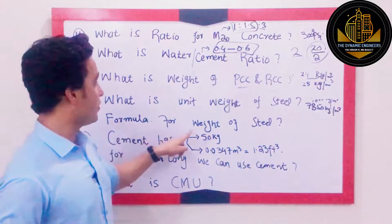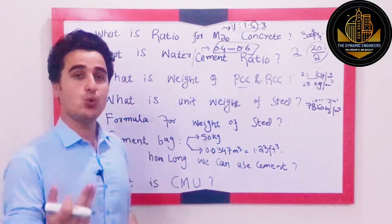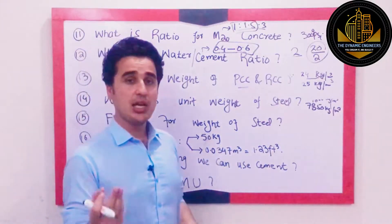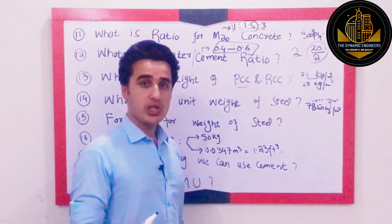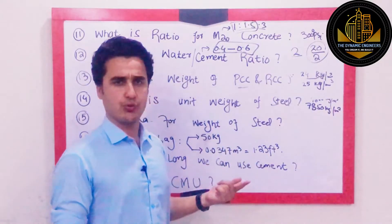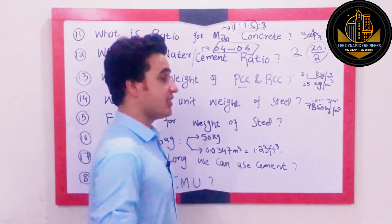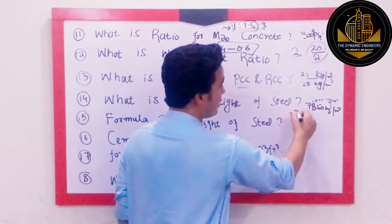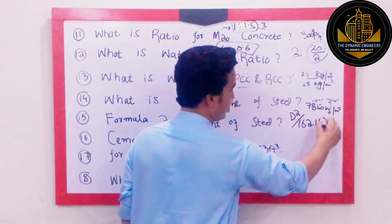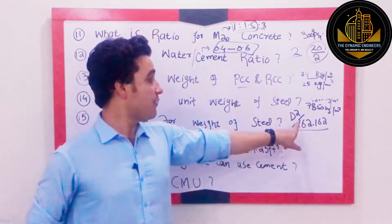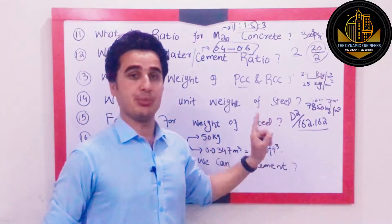Question number 15: What is the formula for the unit weight of steel? The general formula to find the weight of steel in kilogram per meter is D squared divided by 162. So the formula is: weight (kg/m) = D² / 162.